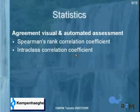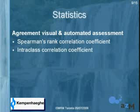For statistics, we assessed agreement between the two techniques — visual and automatic. We used the Spearman rank correlation coefficient and intraclass correlation coefficient. We used Spearman instead of Pearson because the population assessed was not homogeneous and did not show a Gaussian distribution of lesions, so Spearman rank correlation was more appropriate.